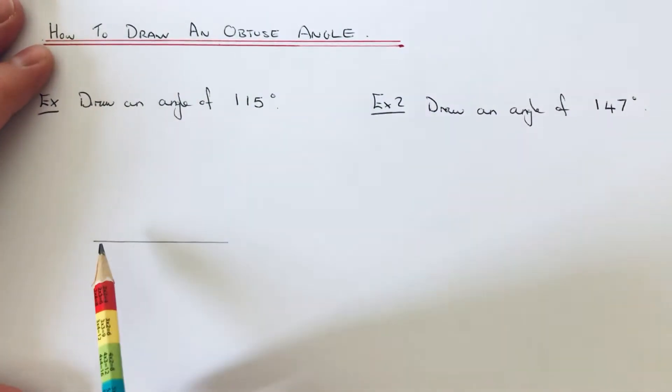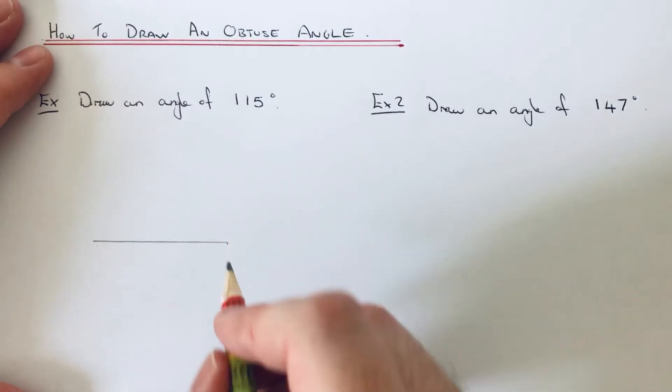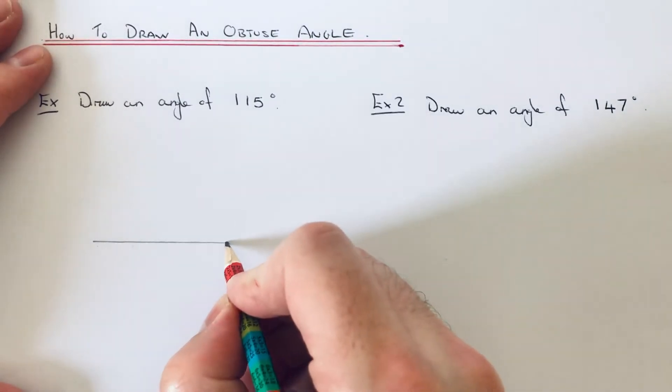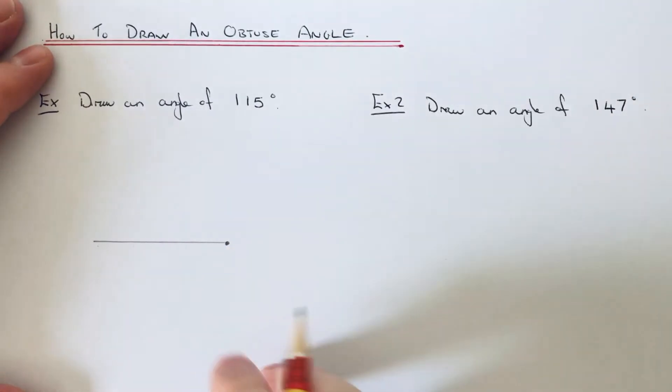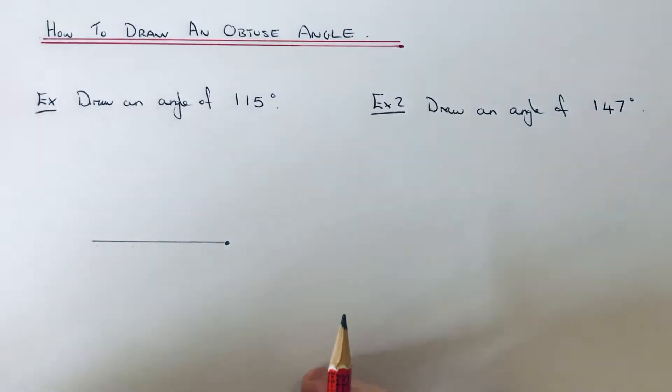Next thing to say is pick a side of the line to measure the angle from. The right side is easier than the left side because on the right side of the line you'll be using the outside scale of the protractor. So let's do the first one on the right side of the line.